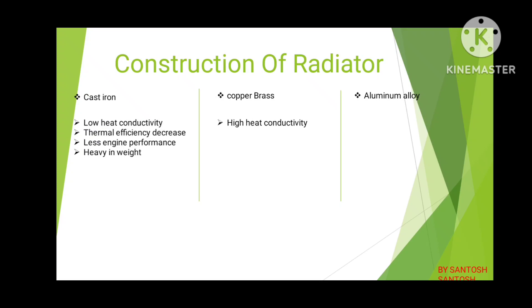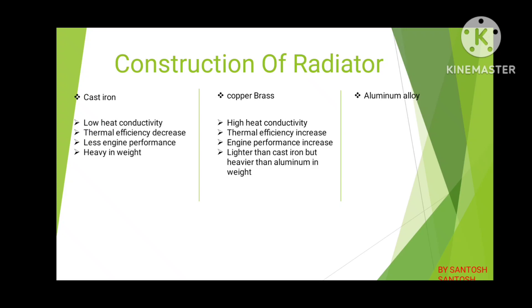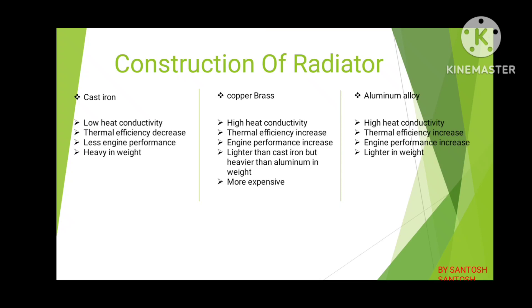In the case of copper brass, it has high heat conductivity, so thermal efficiency increases and engine performance also increases. It is lighter in weight than cast iron but heavier than aluminum alloy, making it a little more expensive. In the case of aluminum alloy, it similarly has high heat conductivity, so thermal efficiency and engine performance also increase. It is lighter in weight than both cast iron and copper brass, and it is affordable — it has a lower cost.